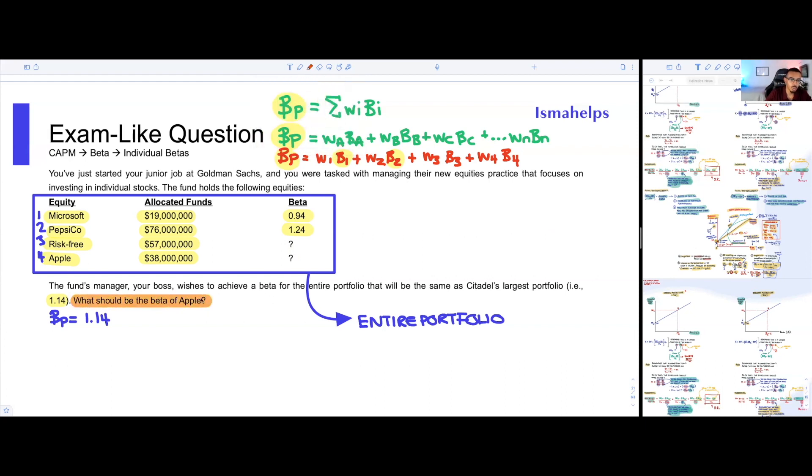I should tell you that we're solving for the beta of Apple. That's our mission, that's our grand goal here. We need to find the weights of Microsoft, of PepsiCo, of the risk-free rate, and of Apple. How do we do that? Well, once again, fairly simple. We know that this technically would be weight of one, weight of two, weight of three, weight of four. However, you need to understand, what is the total sum of money that was invested in this portfolio?